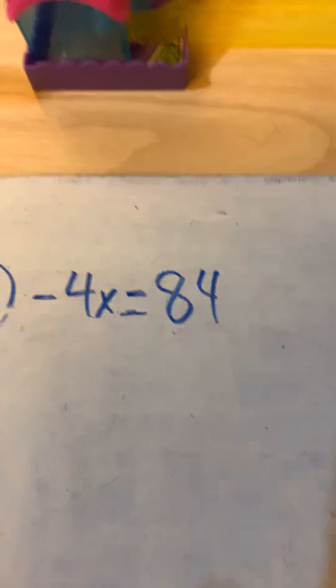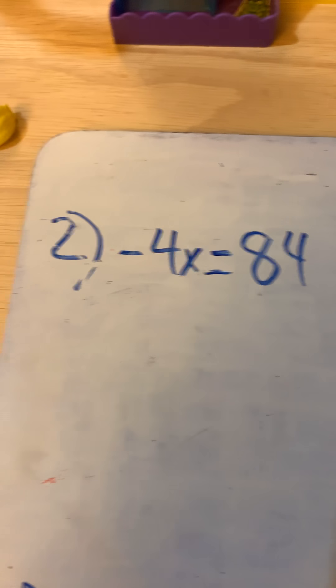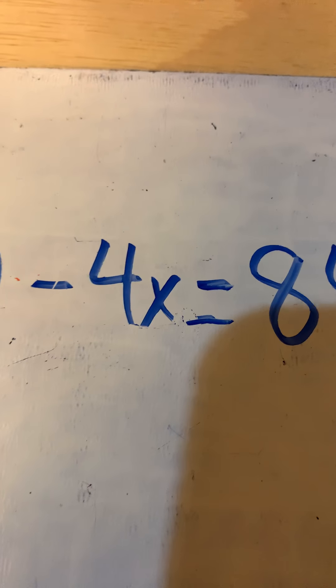Boink. One of the questions, number two, is negative 4x equals 84.